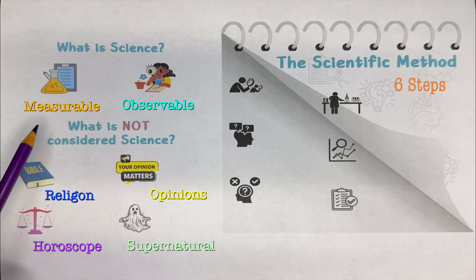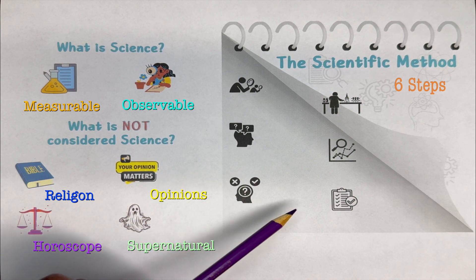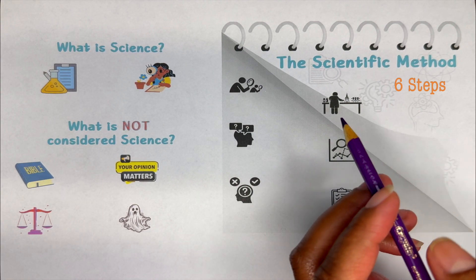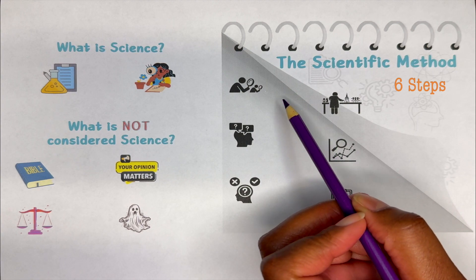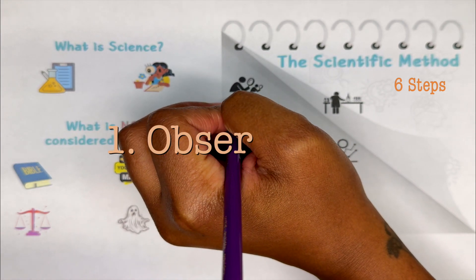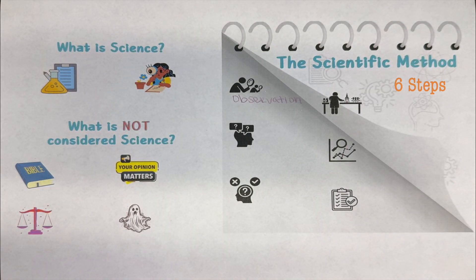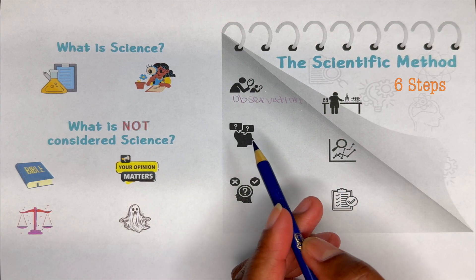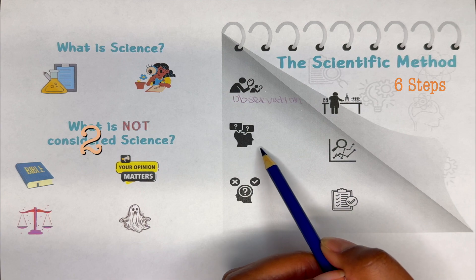Now that you know what science can and cannot study, let's talk about the six different logical processes or steps of the scientific method. The first step is observation — you observe something, you see something. The second step is to ask a question about what you observed.